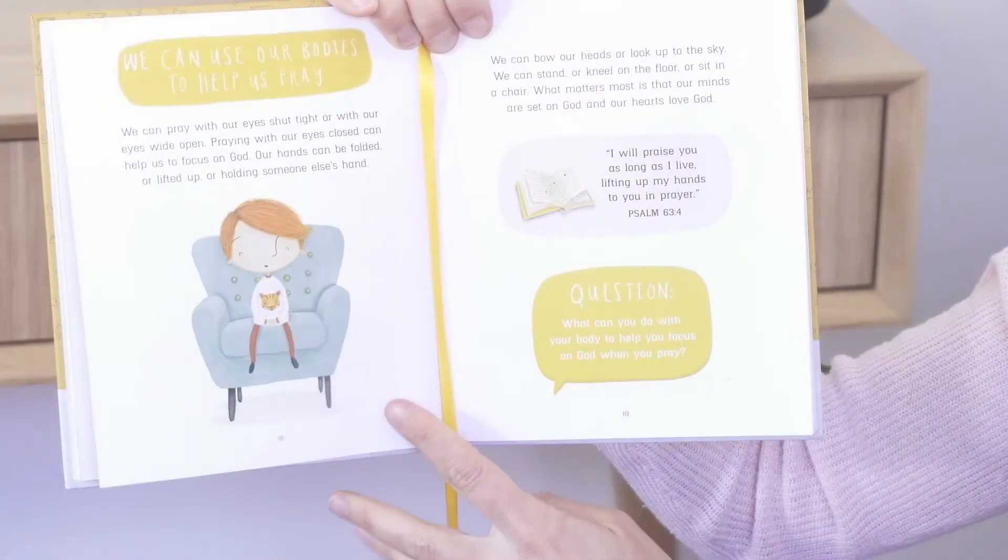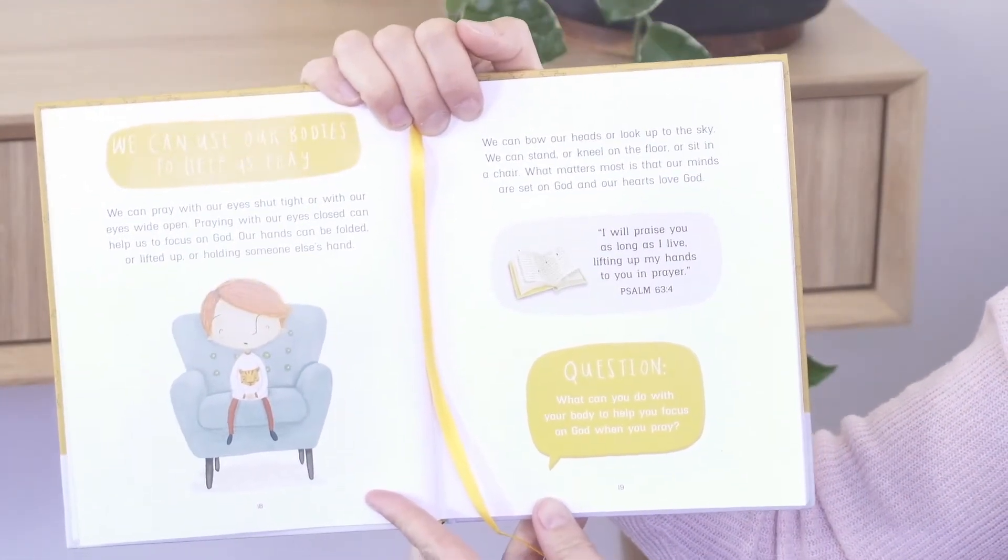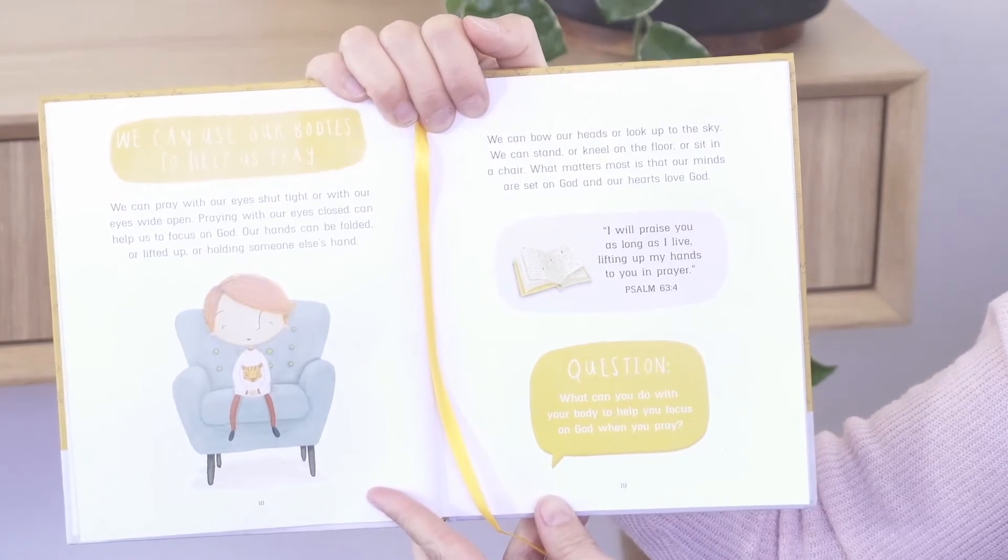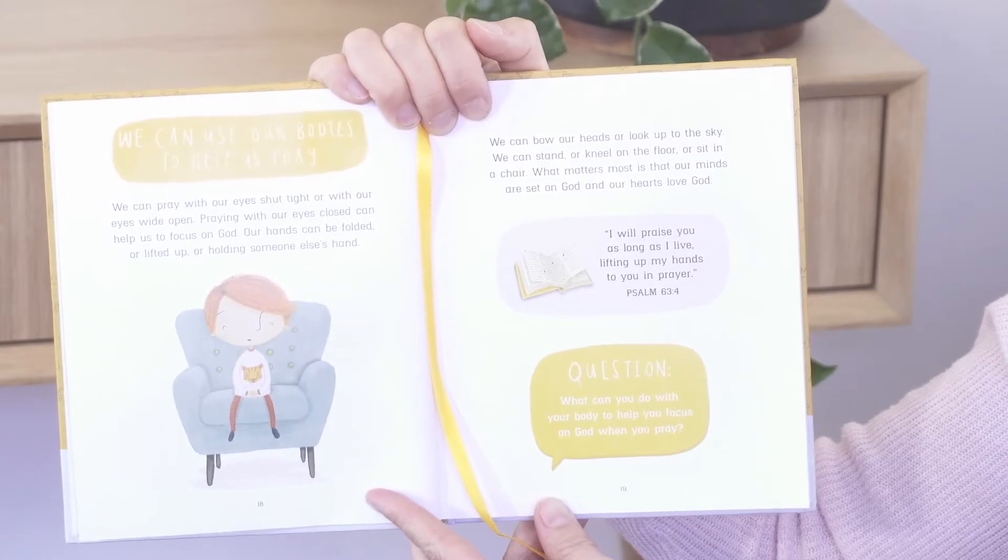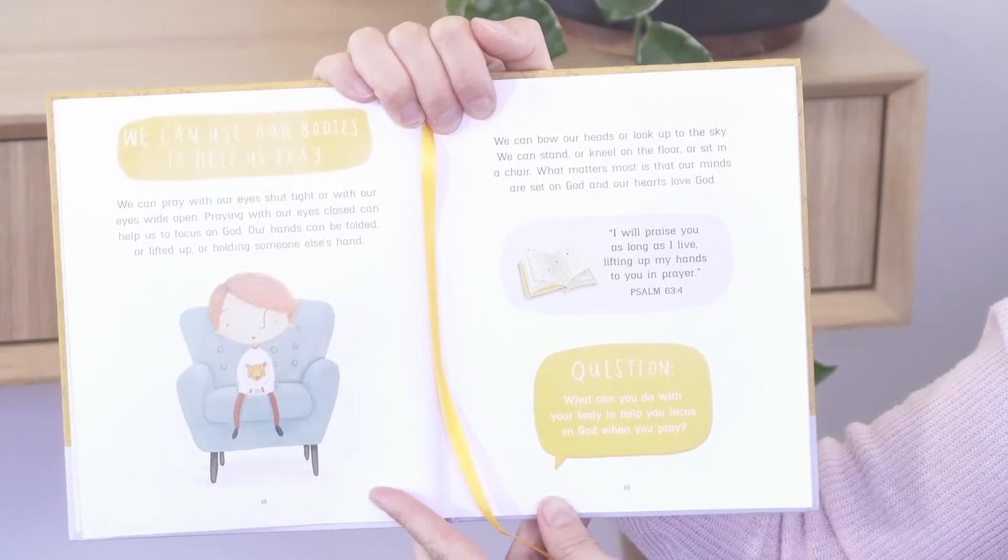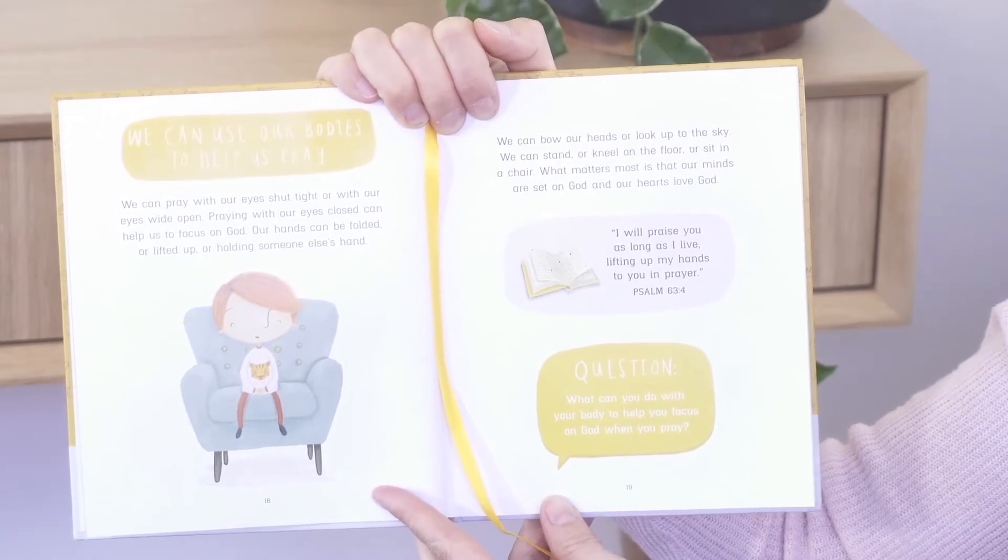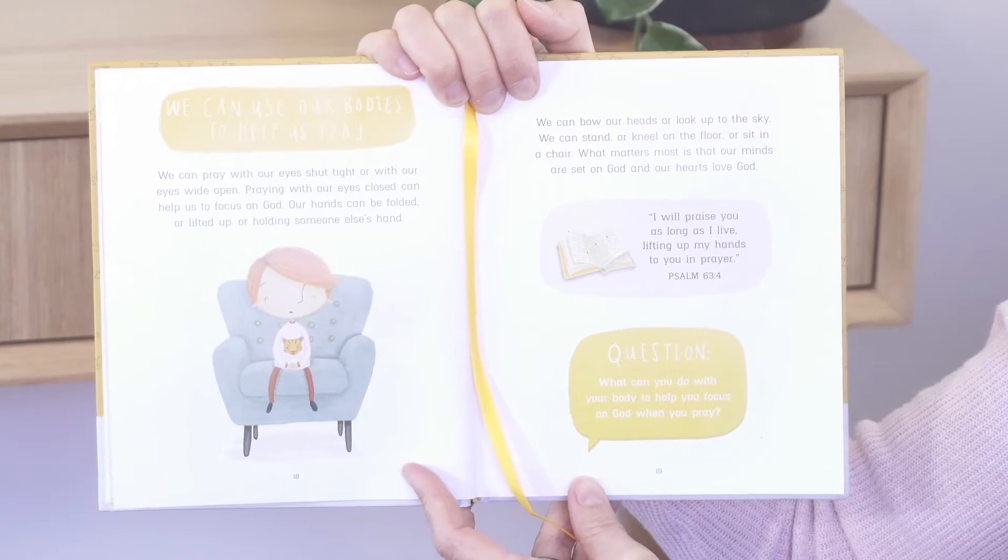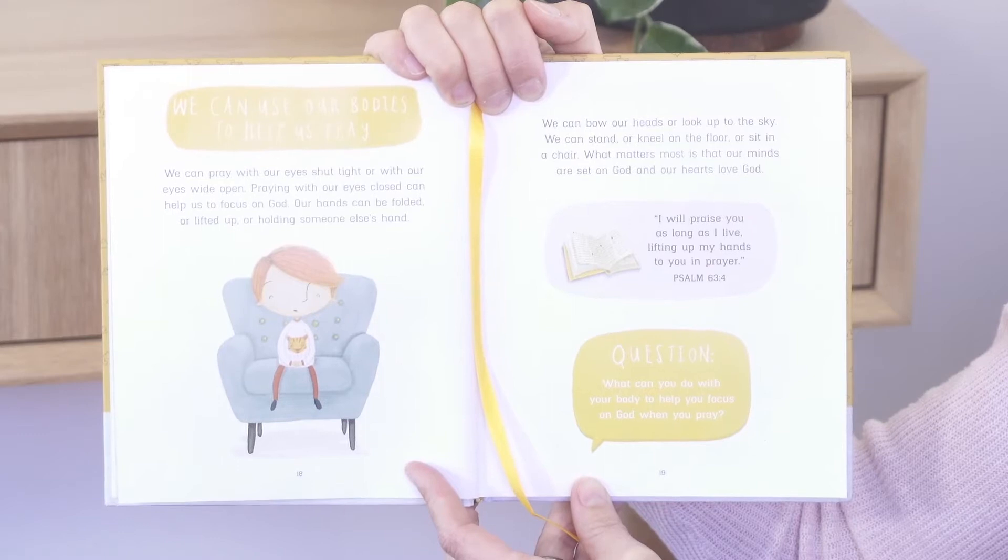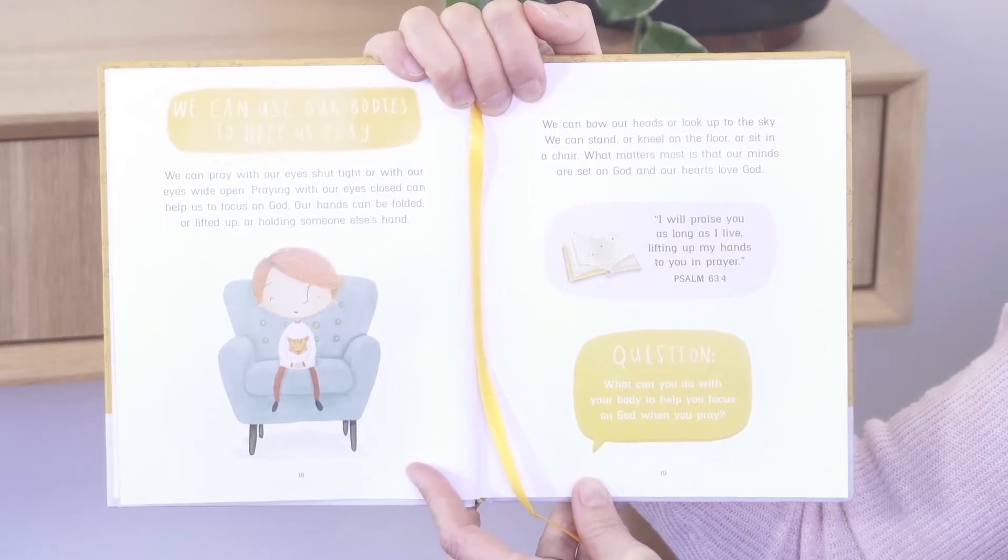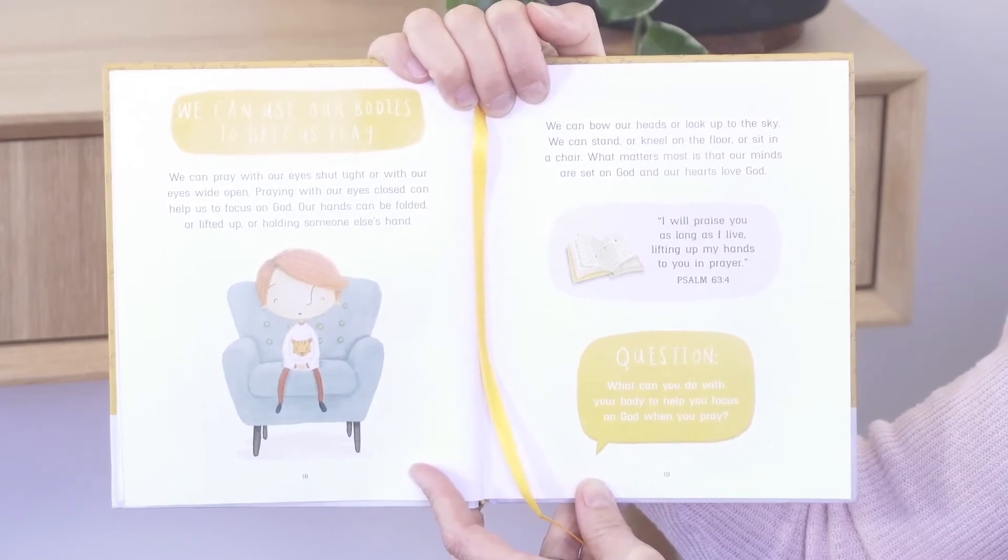This chapter says we can use our bodies to help us pray. We can pray with our eyes tight shut or with our eyes wide open. Praying with our eyes closed can help us to focus on God. Our hands can be folded or lifted up or holding someone else's hand. We can bow our heads or look up to the sky. We can stand or kneel on the floor or sit in a chair. What matters most is that our minds are set on God and our hearts love God.